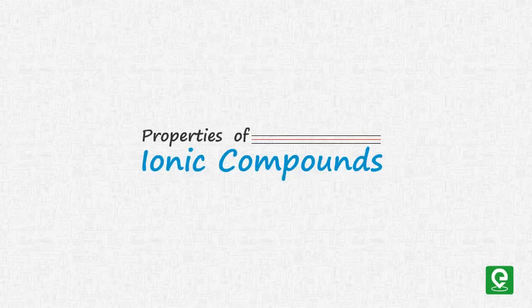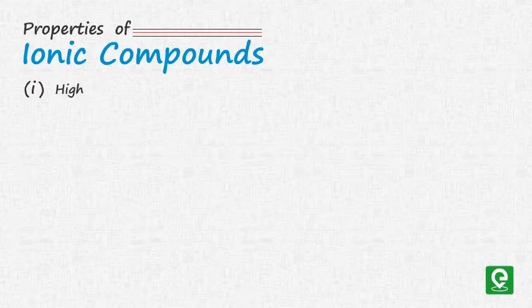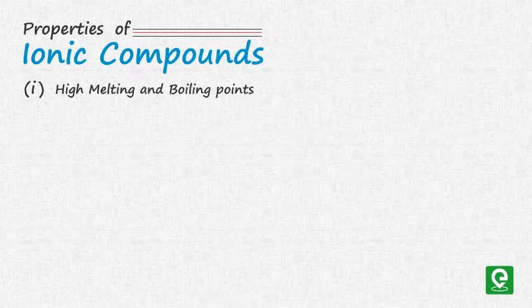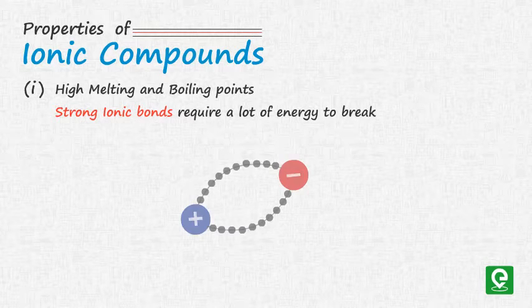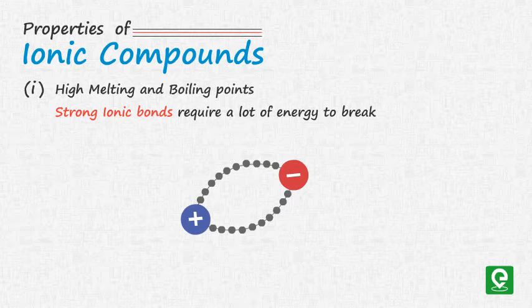Number one: ionic compounds have high melting and boiling points. Ionic bonds are very strong and a lot of energy is required to break them. Therefore, ionic compounds have high melting and boiling points.